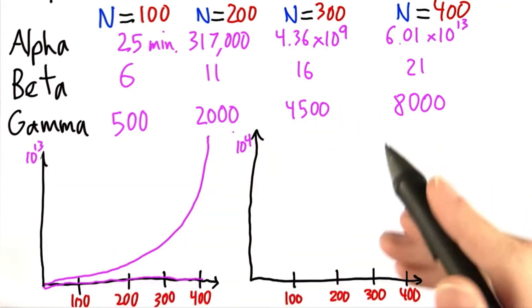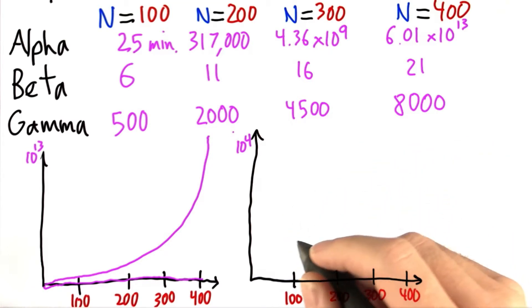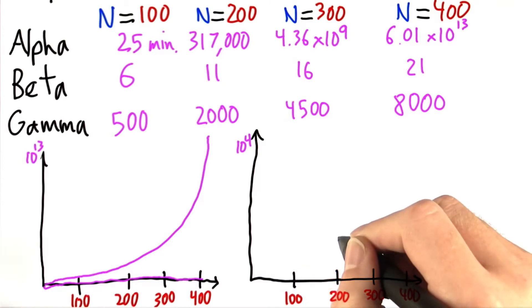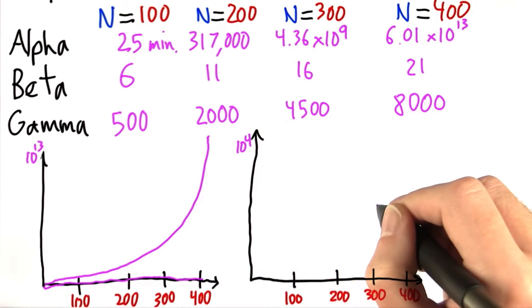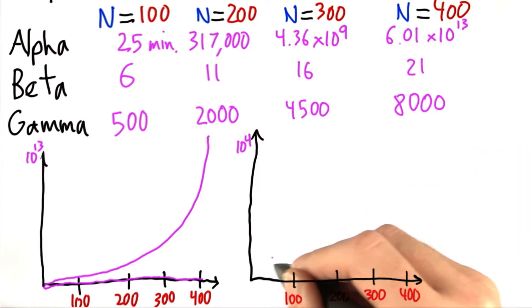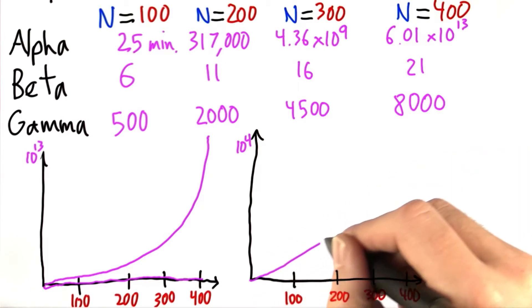At N equals 100, it's still pretty small. At 200, it's closer. And at 300, it's about halfway there. And then it gets about here. So let's go ahead and draw that.